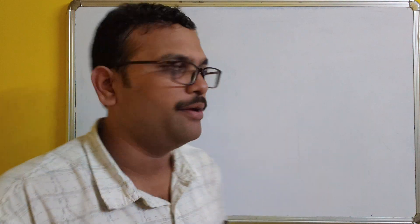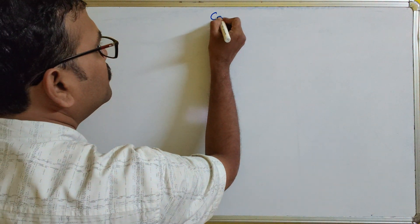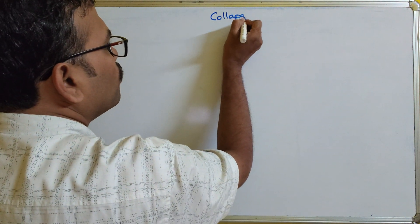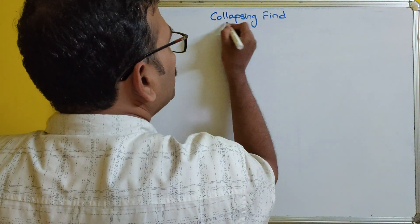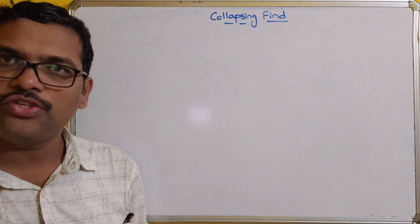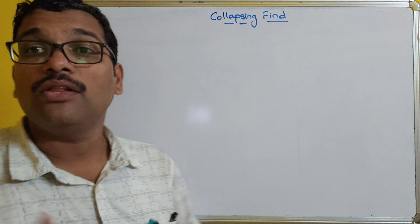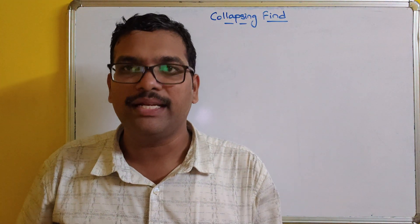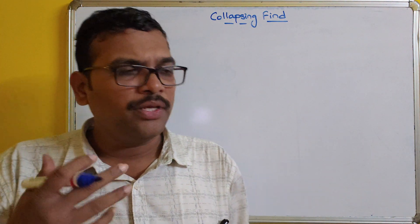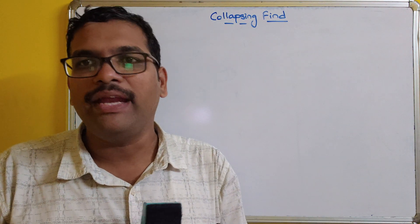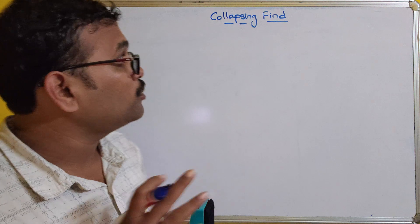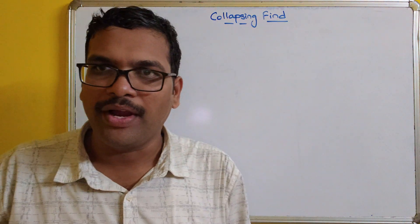Hello friends, welcome back to our channel. Today we will see one more operation on disjoint sets, that is a collapsing find. In our previous session we have seen what is a disjoint set and what operations can be performed on them. We have seen three operations: simple union, simple find, and weighted union. The fourth operation is a collapsing find.